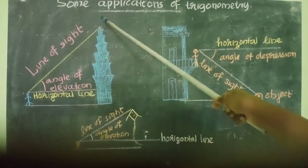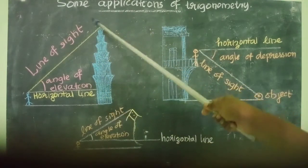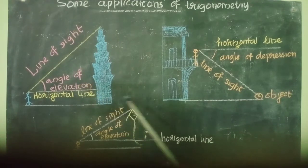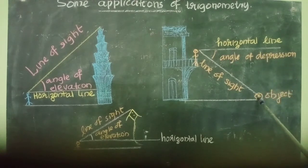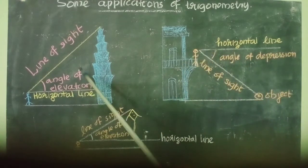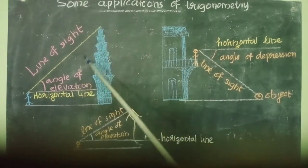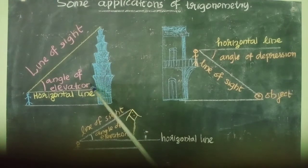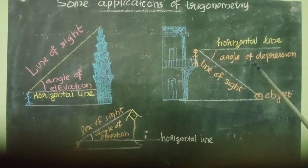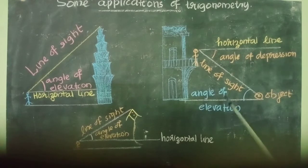So to summarize: if the object is above the horizontal line, the angle is the angle of elevation. If the object is below the horizontal line, the angle is the angle of depression. If the person is looking up, it is the angle of elevation, and if the person is looking down, it is the angle of depression.